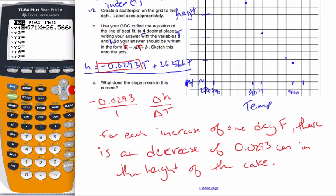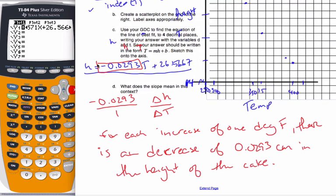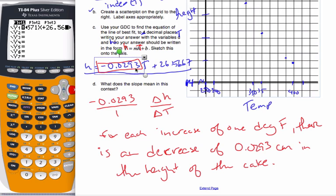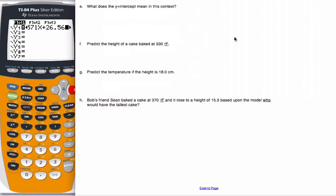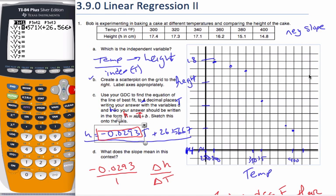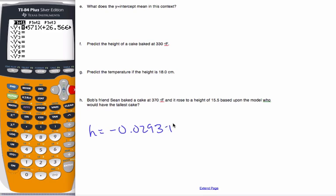So that's what the slope, this value here means. So for every increase of one degree of temperature, there's a decrease of 0.0293 centimeters in the height of the cake. So the height's getting smaller as our temperature increases. Okay, great. So now I know for the next part, I need to steal this equation. Let's see if I can get, I'll have to recopy it. Let me remind, remember the equation. Line control. I know, line control. I know H is equal to negative 0.0293, I was going to guess 3T plus 26.5667. So here's our equation.